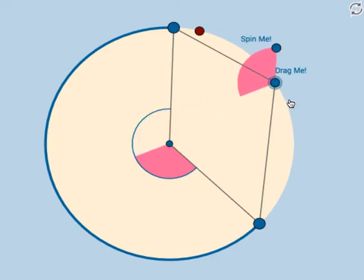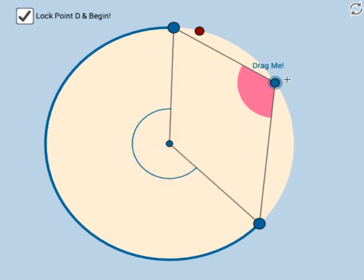And that blue central angle has the same measure as the intercepted arc. Therefore, an inscribed angle measure will always, always measure half of the blue arc there that it intercepts. Thank you very much for watching, and have a great day.